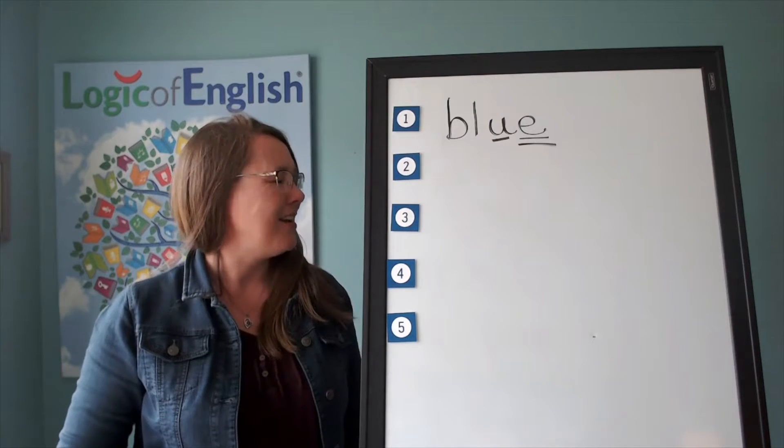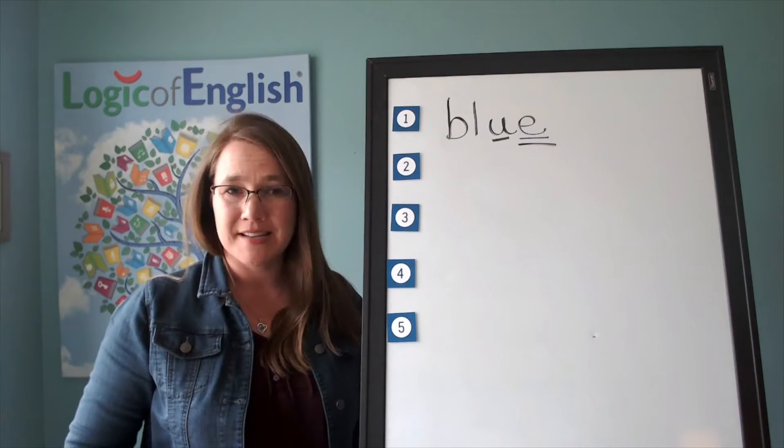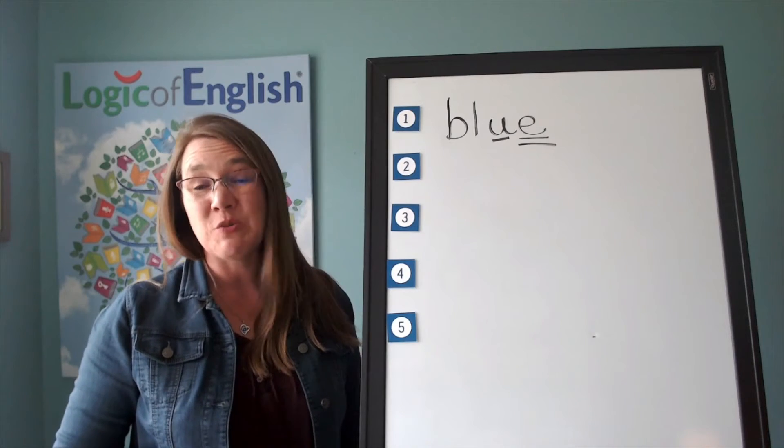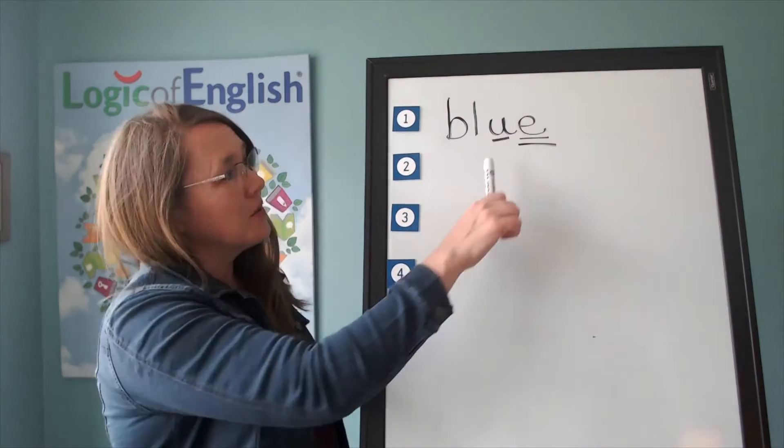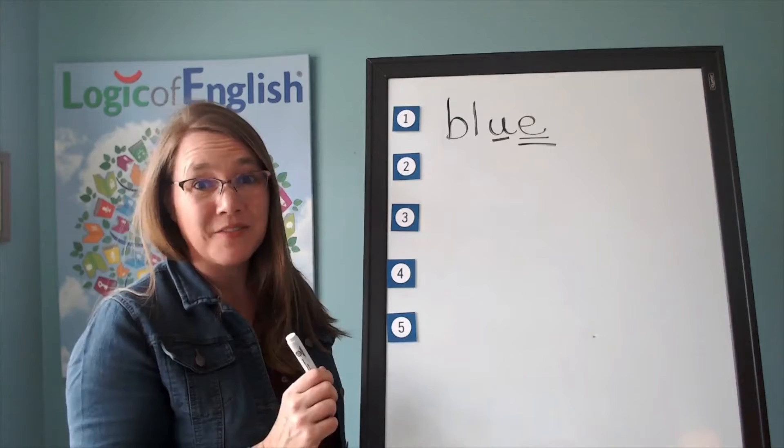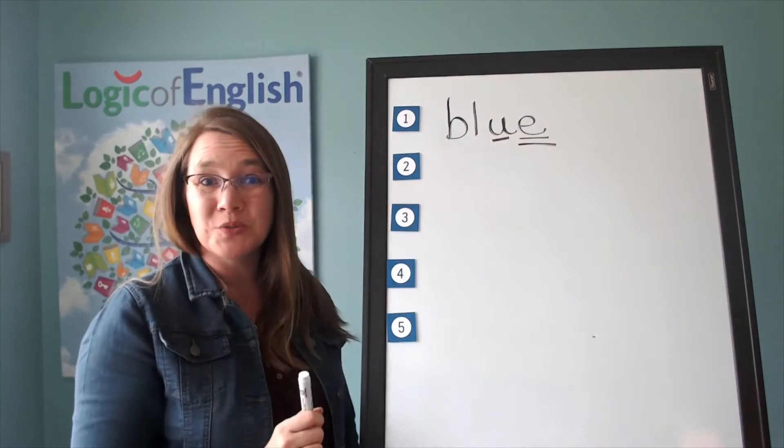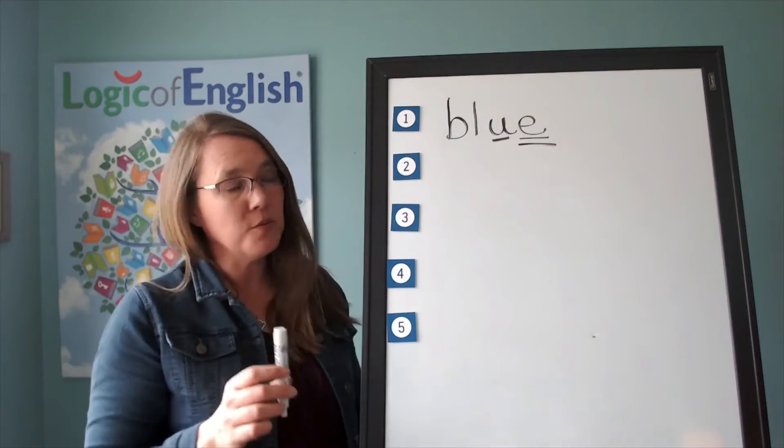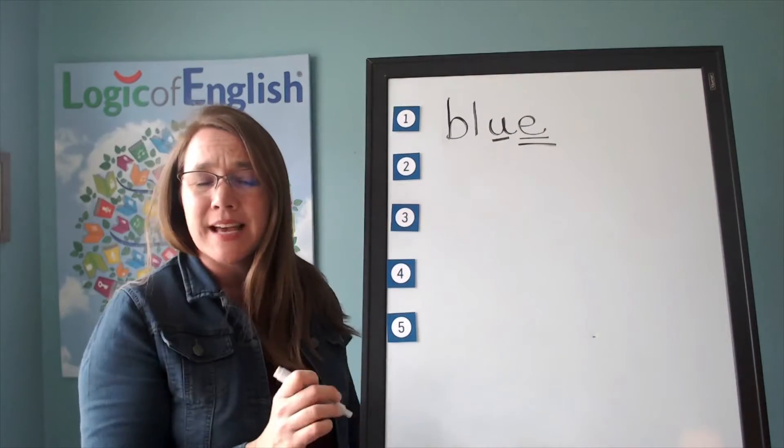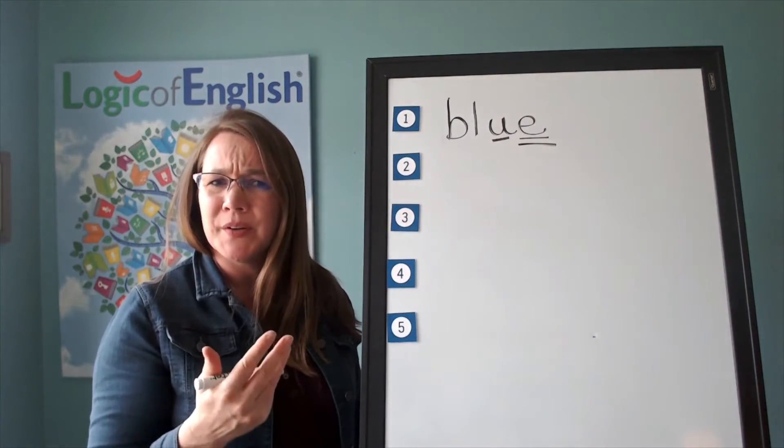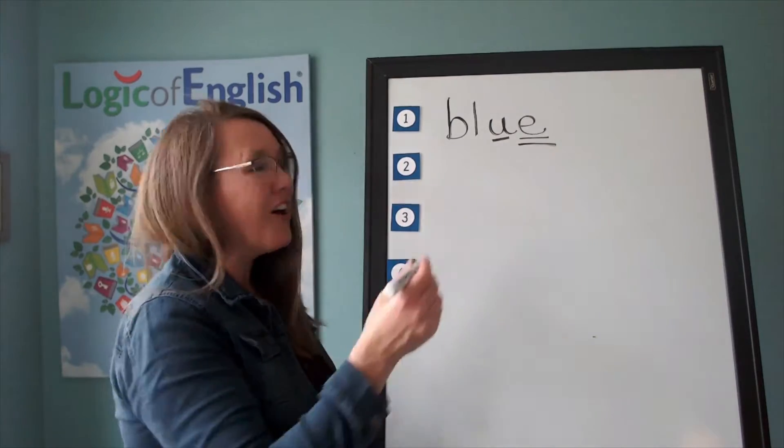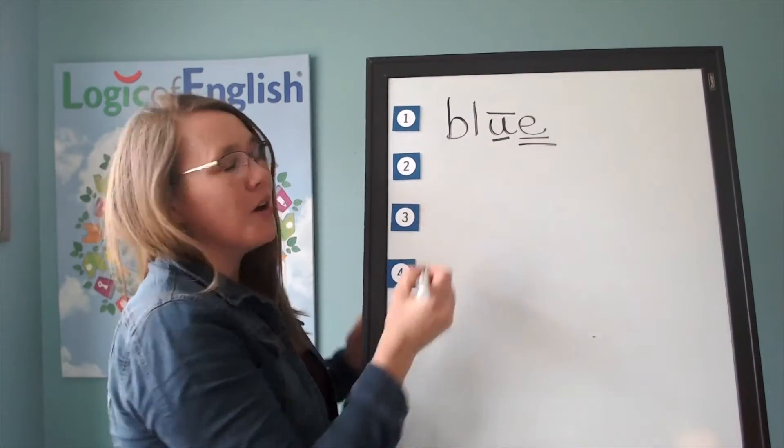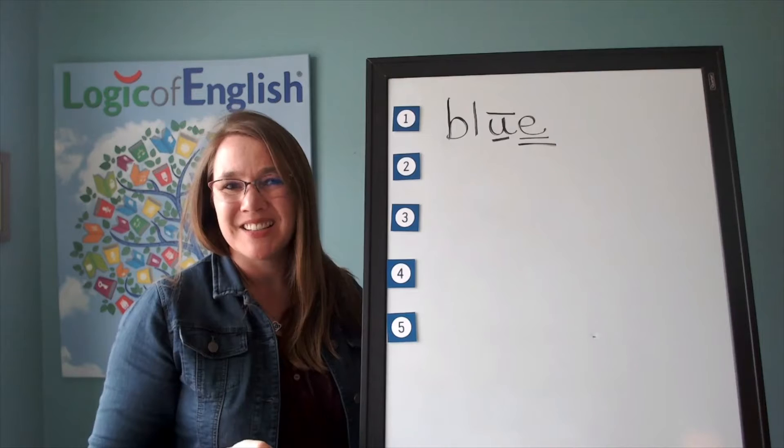Let's say that together. English words do not end in I, U, V, or J. So here we have to have a silent E because of the U. By the way, what sound of U is that saying in uh, u, oo, uh? It's saying one of its long sounds, isn't it? So we'll also put a line over it because it's saying its long sound.